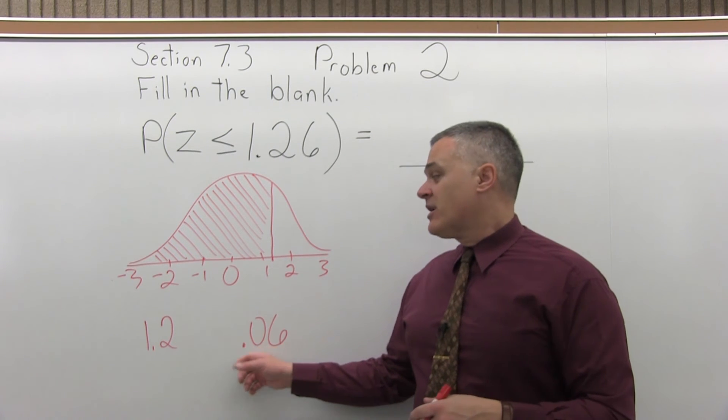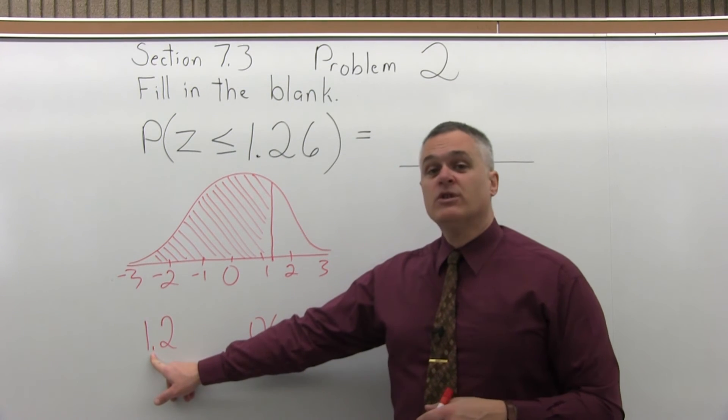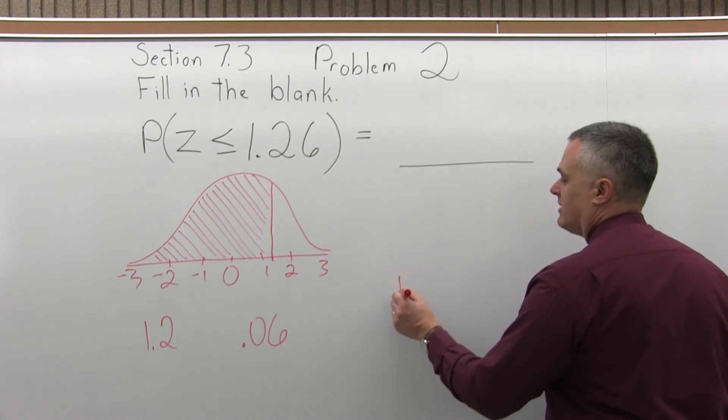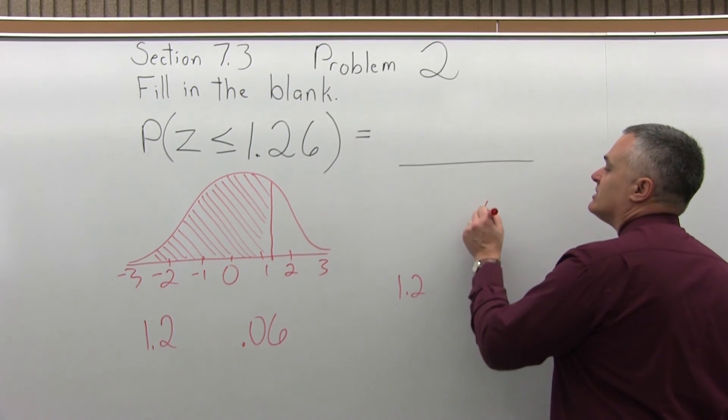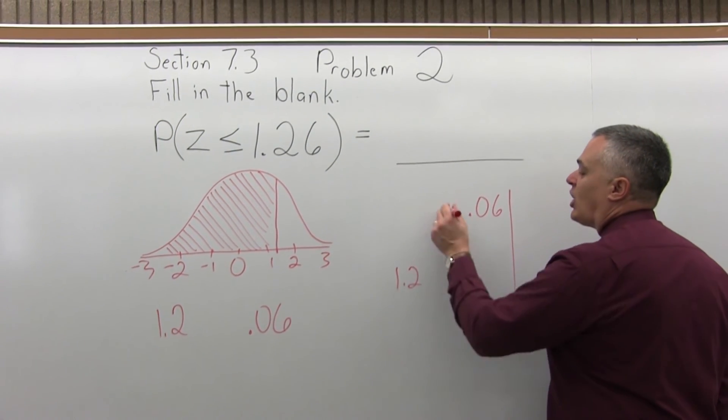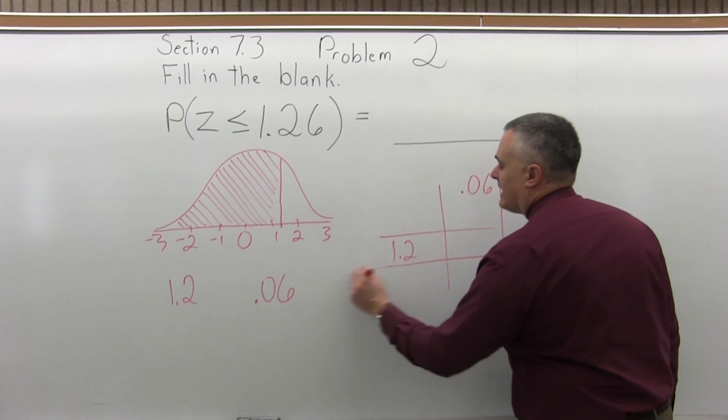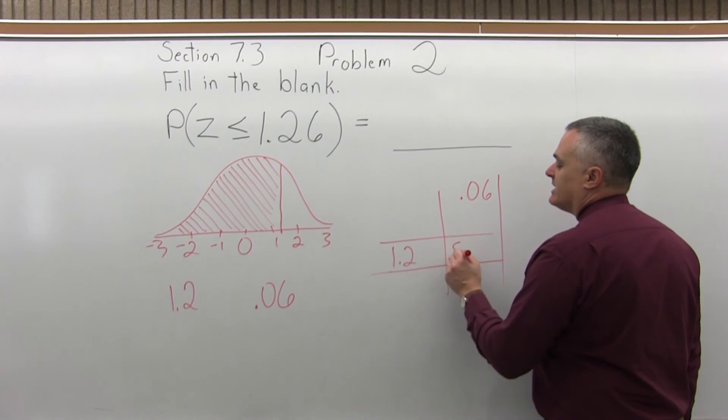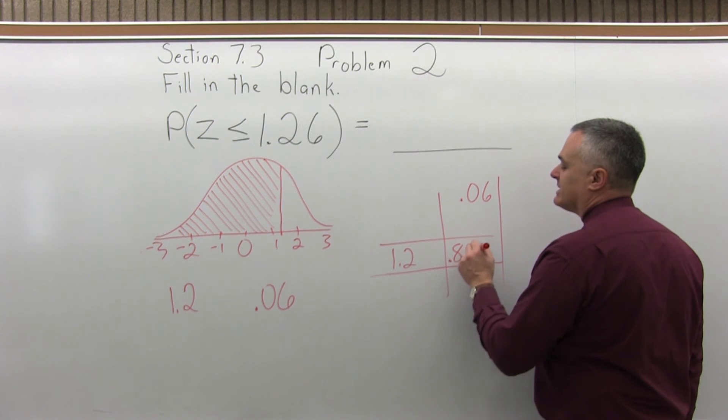Now we go to the chart. We're going to go to the 1.2 row of the positive part of the chart and see where that intersects with the .06 column. And if you find that point of intersection, it's .8962.